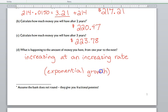Increasing at an increasing rate is exponential growth. Now, in the last model we did, with the pennies, that wasn't exponential growth. What was that?